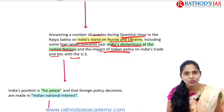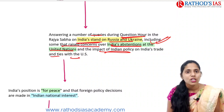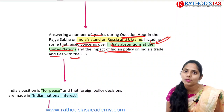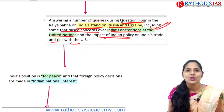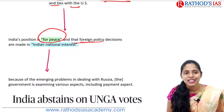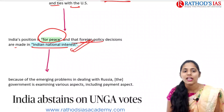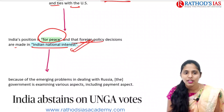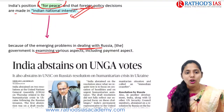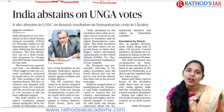Answering queries in the Rajya Sabha regarding India's stand on Russia and Ukraine — including concerns about India's abstentions at the United Nations and the impact of Indian policy on trade with the US — our External Affairs Minister said that India's position is for peace and that foreign policy decisions are made in India's national interest. Because of emerging problems in dealing with Russia, the government is examining various aspects including payment mechanisms.